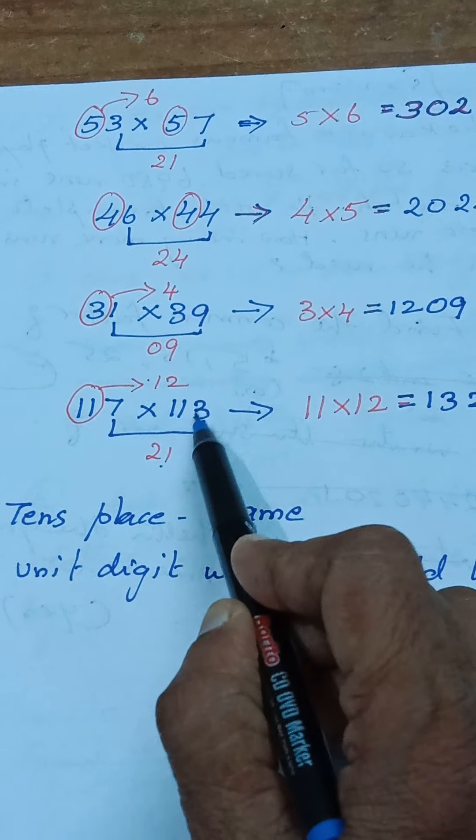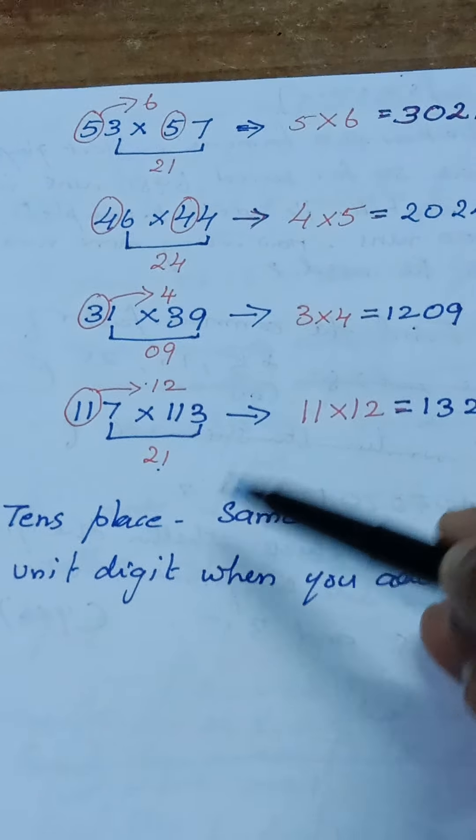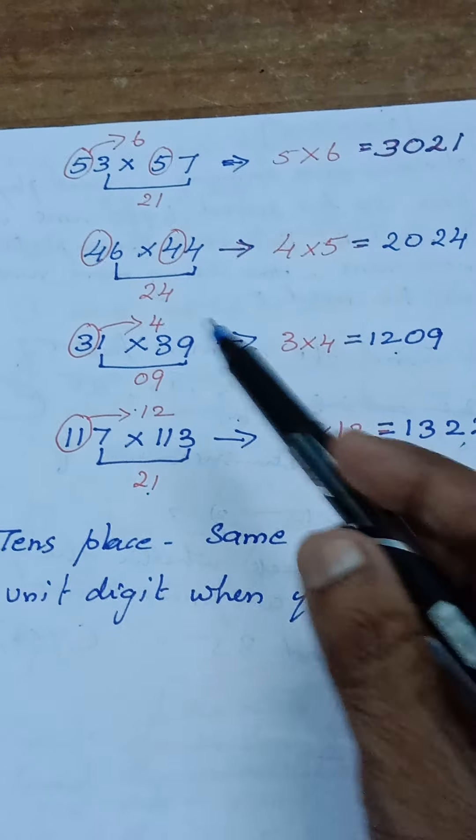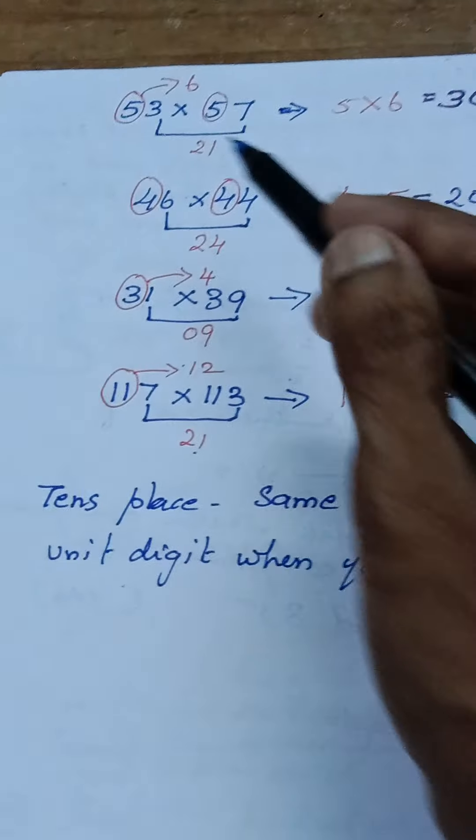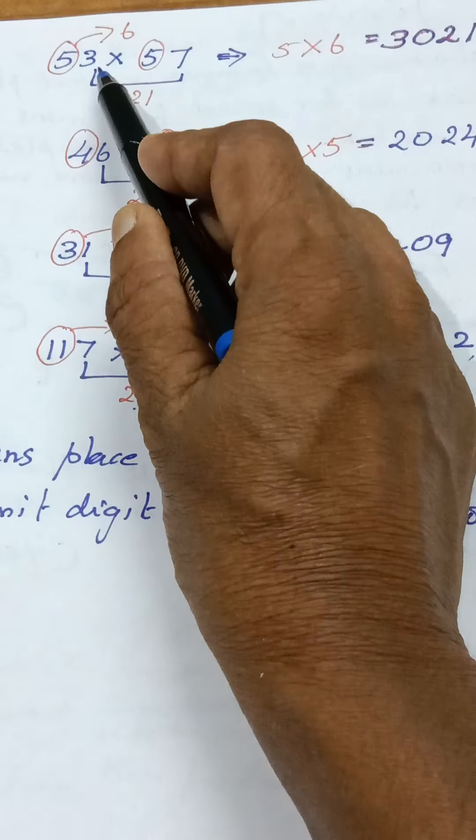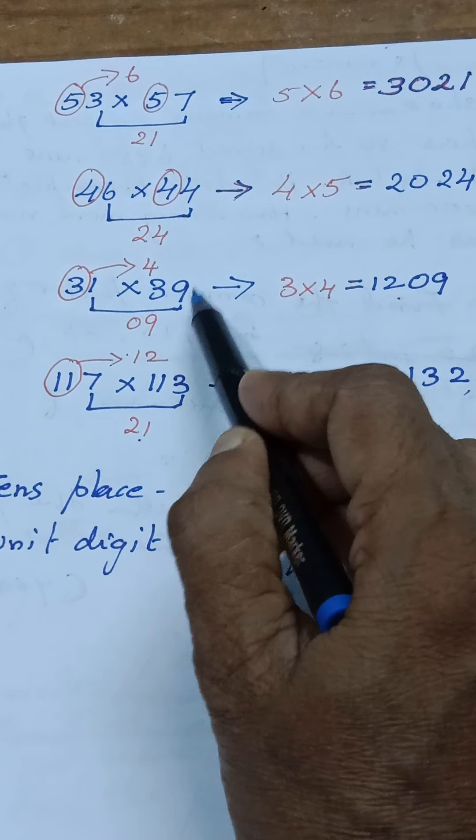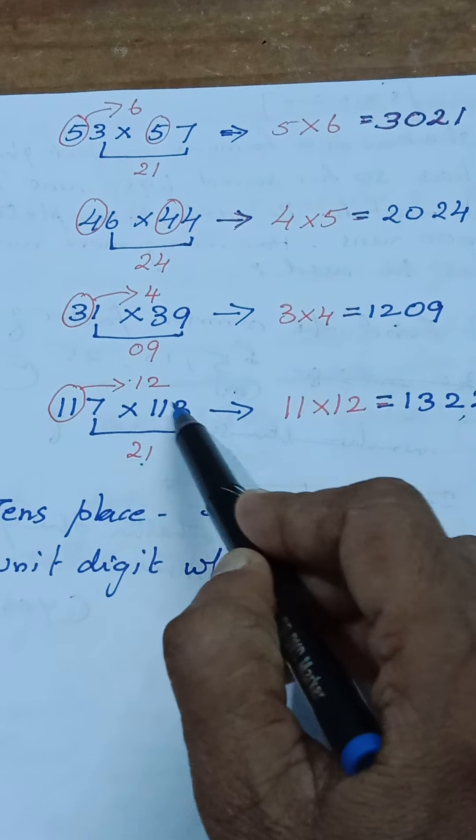And second condition is the unit digit place. When we are adding the unit digit place, we should get the answer 10. So when I'm adding unit digits: 3 plus 7, I should get 10; 6 plus 4 is 10; 1 plus 9 is 10; and 7 plus 3 is 10.